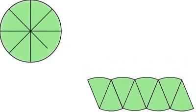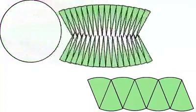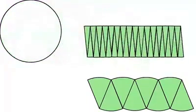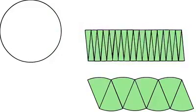We will divide the circle into smaller equal pieces and arrange them in the same manner. You can see that it appears more like a rectangle.